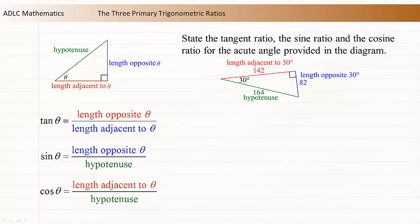Now we can determine the ratios. The tangent ratio is equal to the length opposite the 30-degree angle divided by the length adjacent to the 30-degree angle. So the tangent of 30 degrees is equal to 82 divided by 142, which is approximately 0.577.